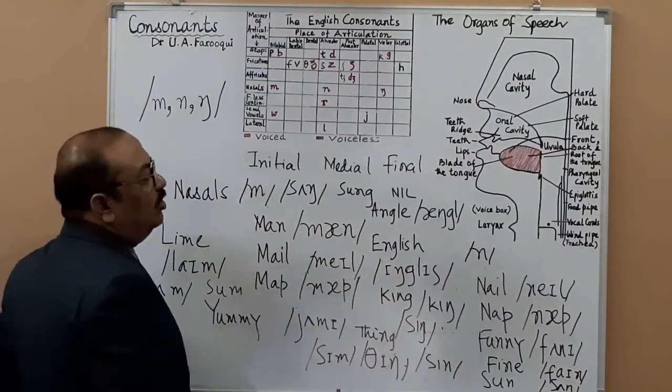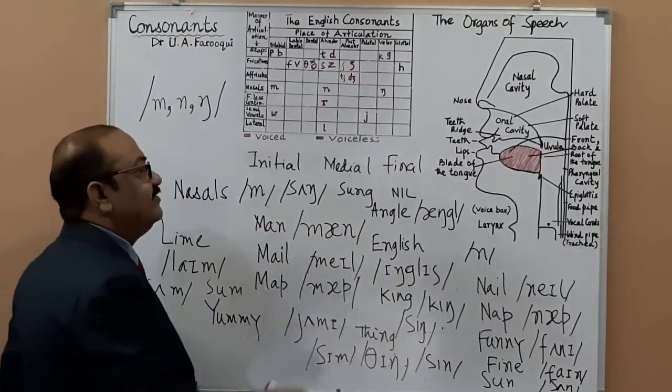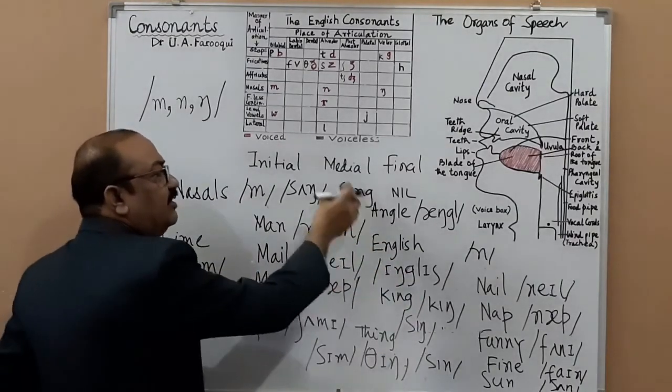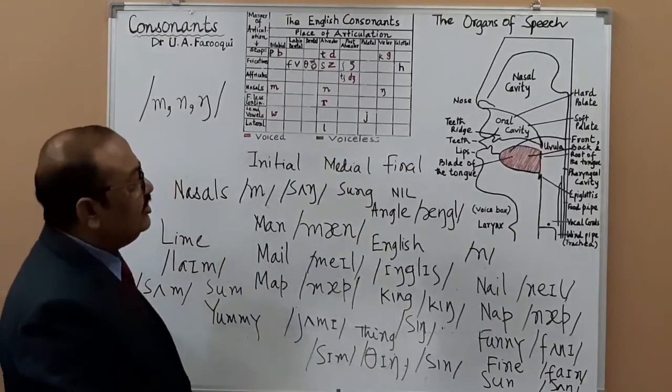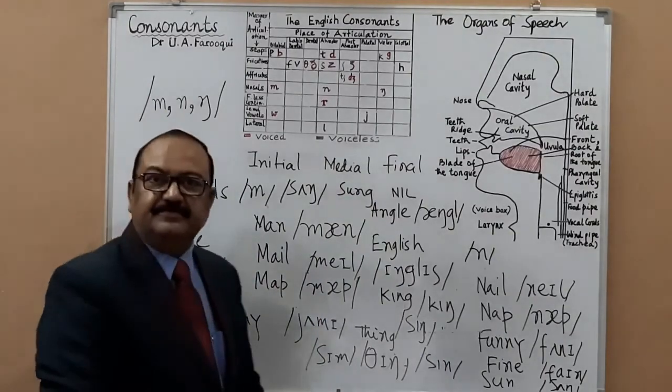For all three positions for the /ŋ/ sound: you do not have the initial occurrence — that's nil — and that completes our discussion of the nasal consonants.